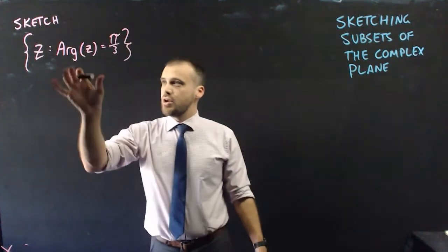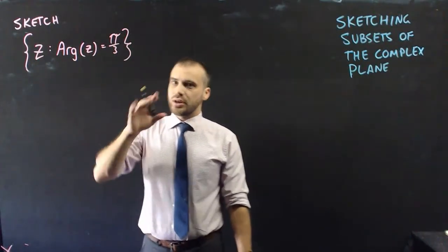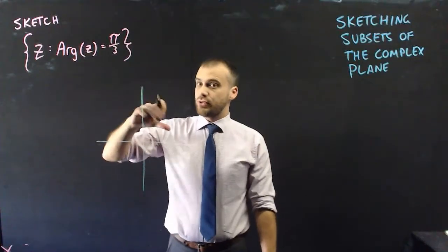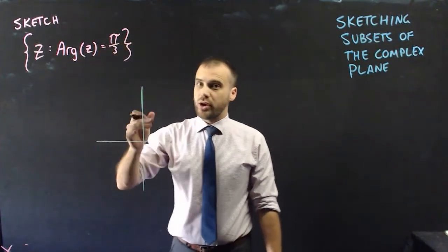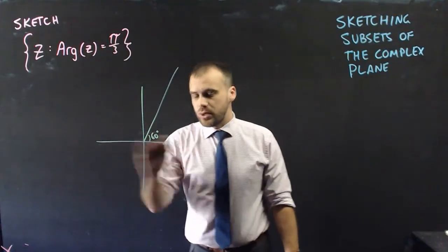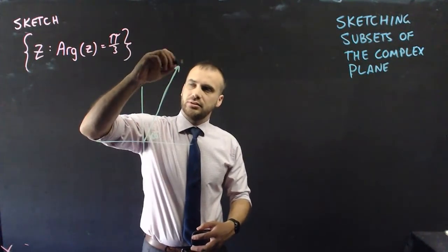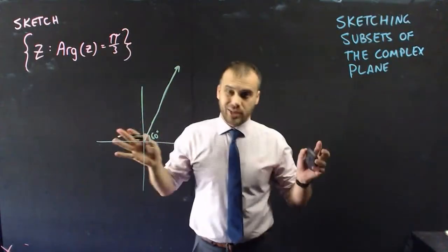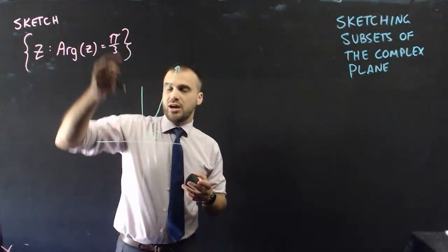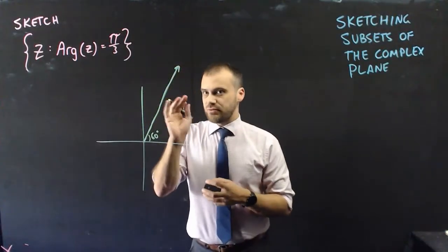Next, we look at conditions on the argument. arg(z) = π/3. I won't work algebraically here — just think geometrically. For a complex number to have an argument of π/3, it must make an angle of 60° with the positive real axis. Anything lying on that ray has an argument of π/3. Going the other direction gives an argument of −2π/3, so that's excluded.